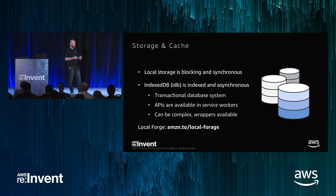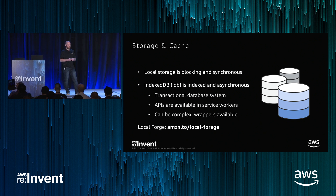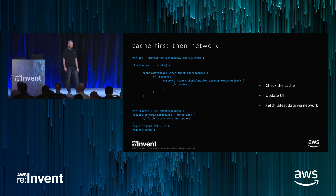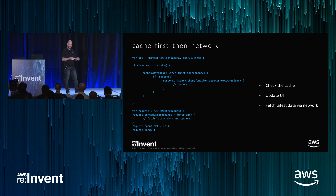Storage and cache: local storage is a blocking and synchronous storage mechanism, so it's not very scalable but it's easy to work with. IndexedDB is a newer standard, asynchronous, and a transactional system. The APIs are available in the service worker natively, but they can be pretty complex and a little difficult to work with. There's a library called Local Forage which makes it easier to work with, wrapping it in a simpler way — just a get and put type of model, similar to local storage. A good strategy for PWAs is called cache first, then network — cache all your data first, update the UI, then fetch the latest data from the network. You can do this asynchronously: always load data from cache and request data from the network, keeping the cache updated. The PWA is always loading from the local cache, making it very fast.